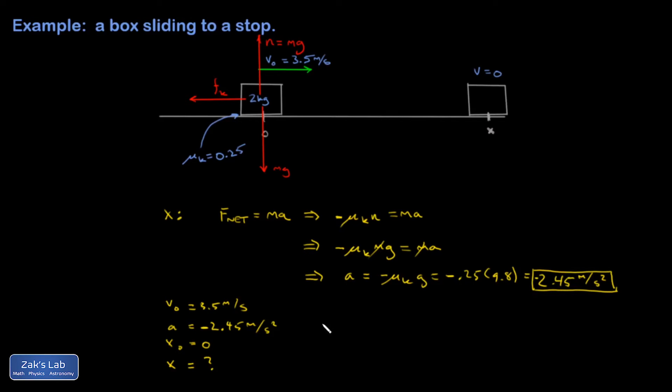So I think the kinematics formula that gets this done quickest, oh, one more thing I should put in my list, is that the final velocity is 0 because I'm sliding to a stop. The formula that will get it done quickest is this one.